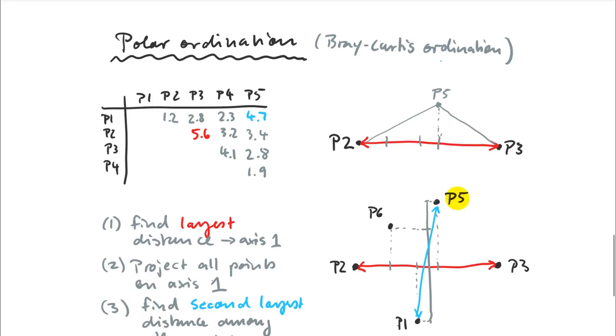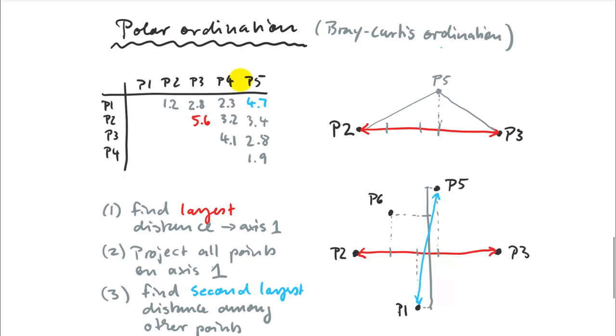The last ordination technique I'd like to mention is the polar ordination. We don't use this anymore, but this is how it got started. It was also invented by Bray Curtis. And this one actually you can do by hand with a ruler and with very simple math. You can do an ordination, and that's what people have done when this started in the 1940s. Ecologists usually didn't have access to computers.